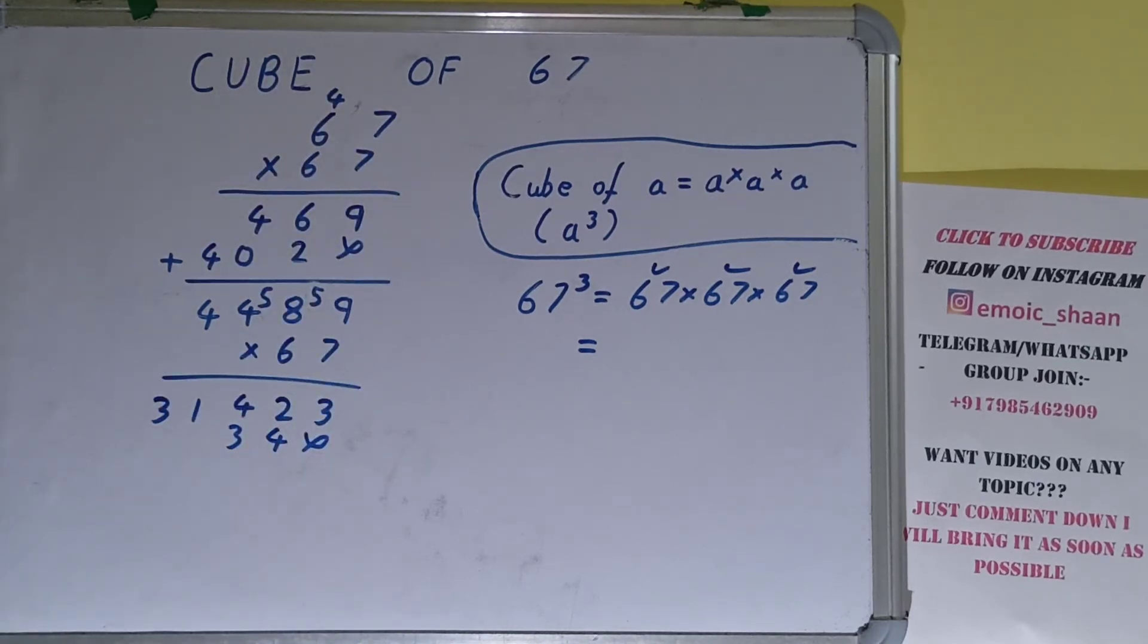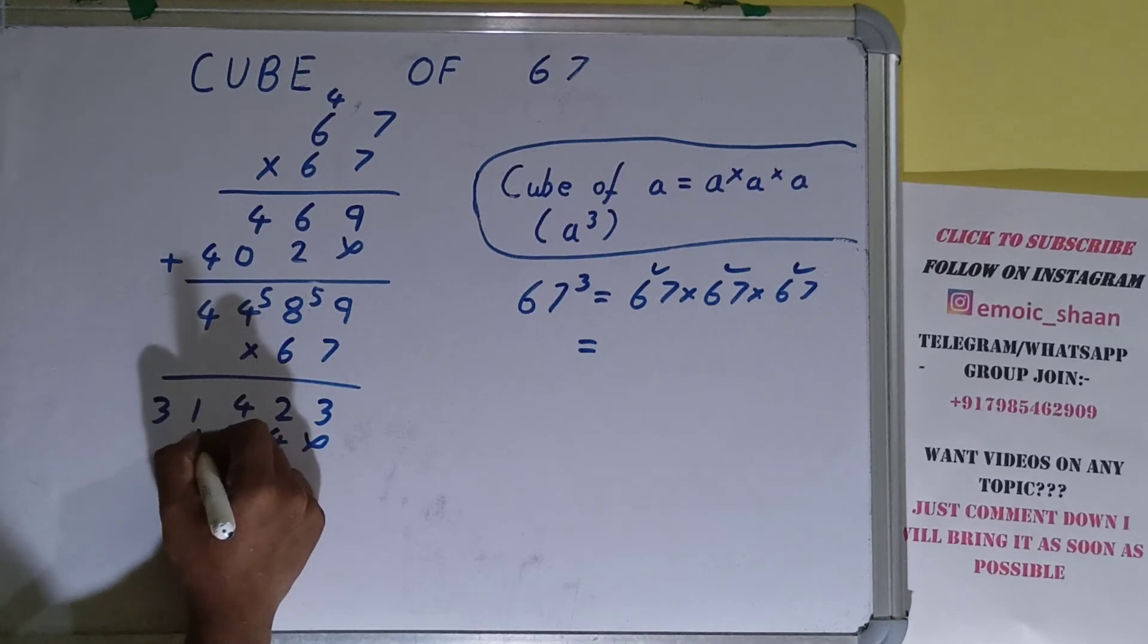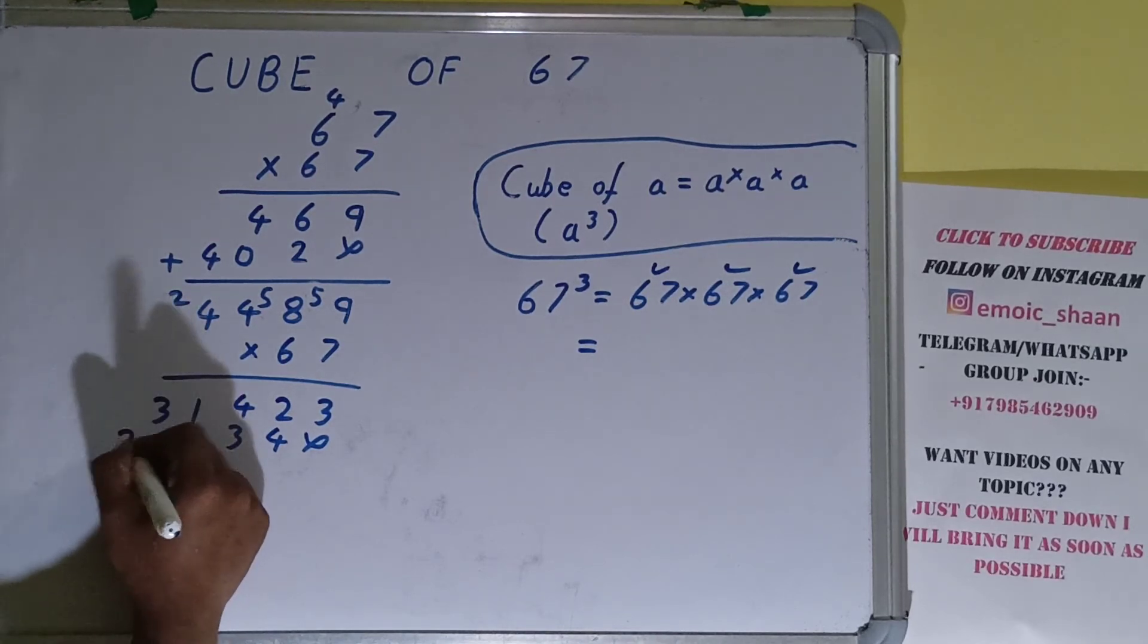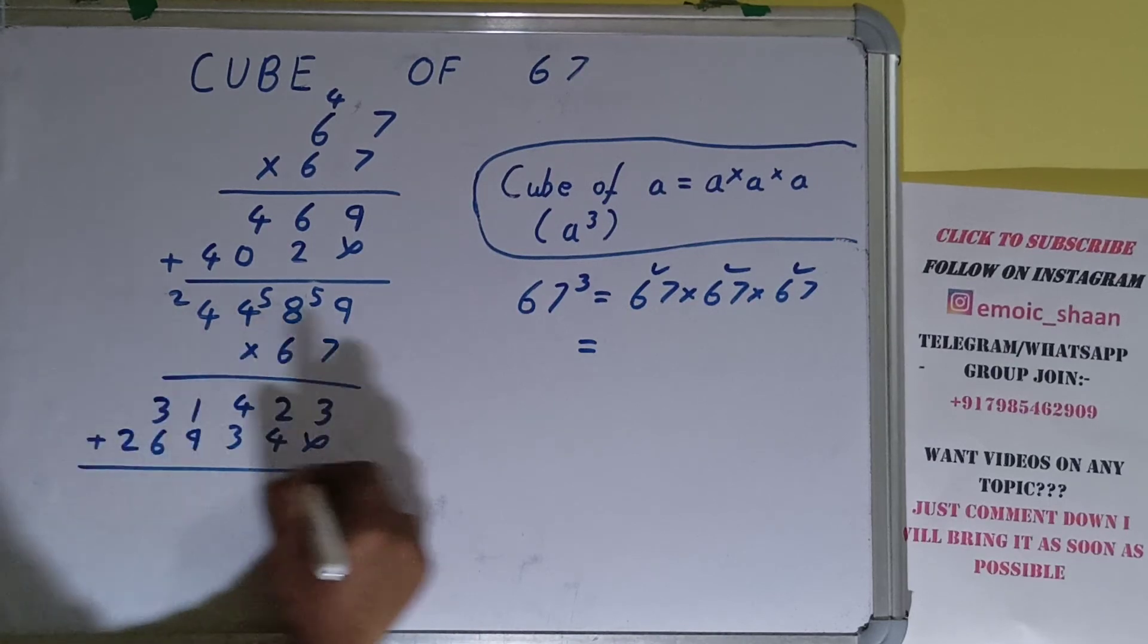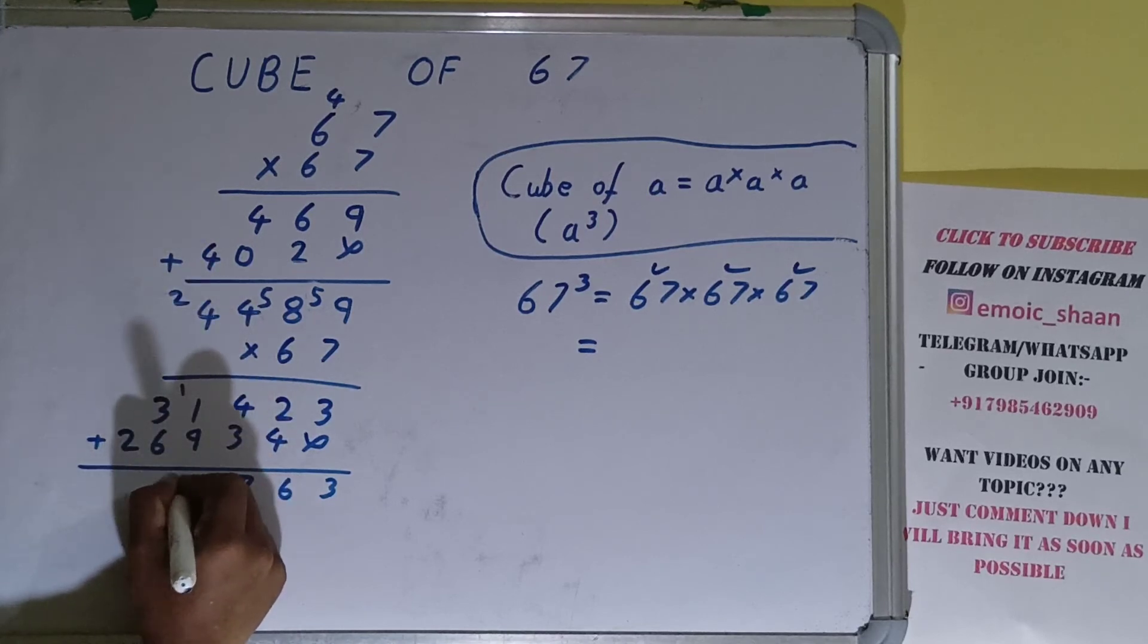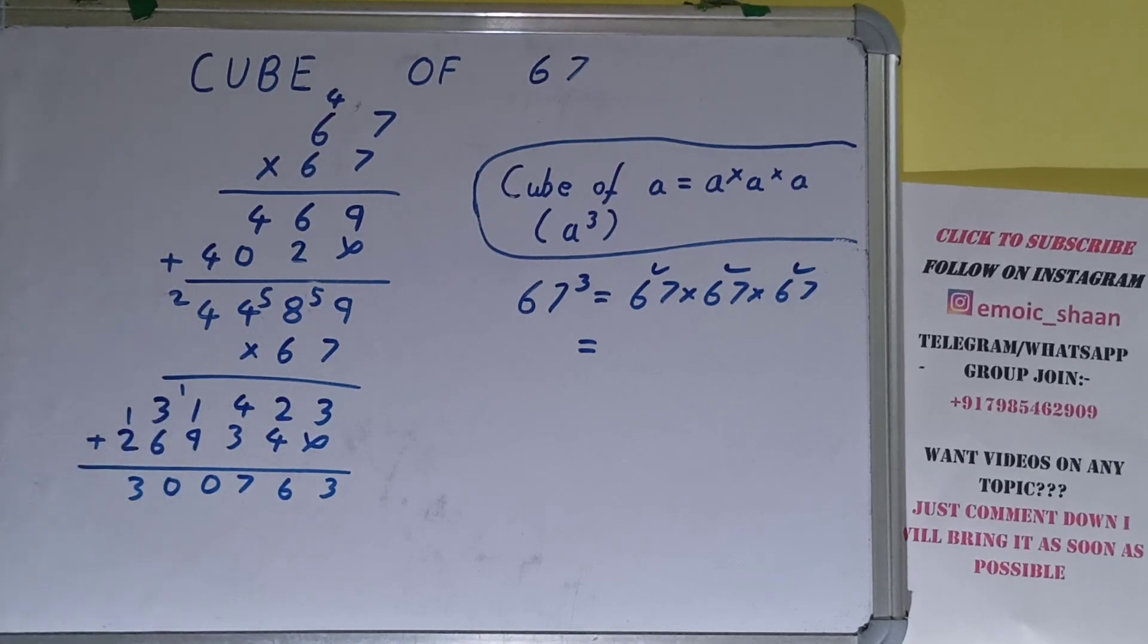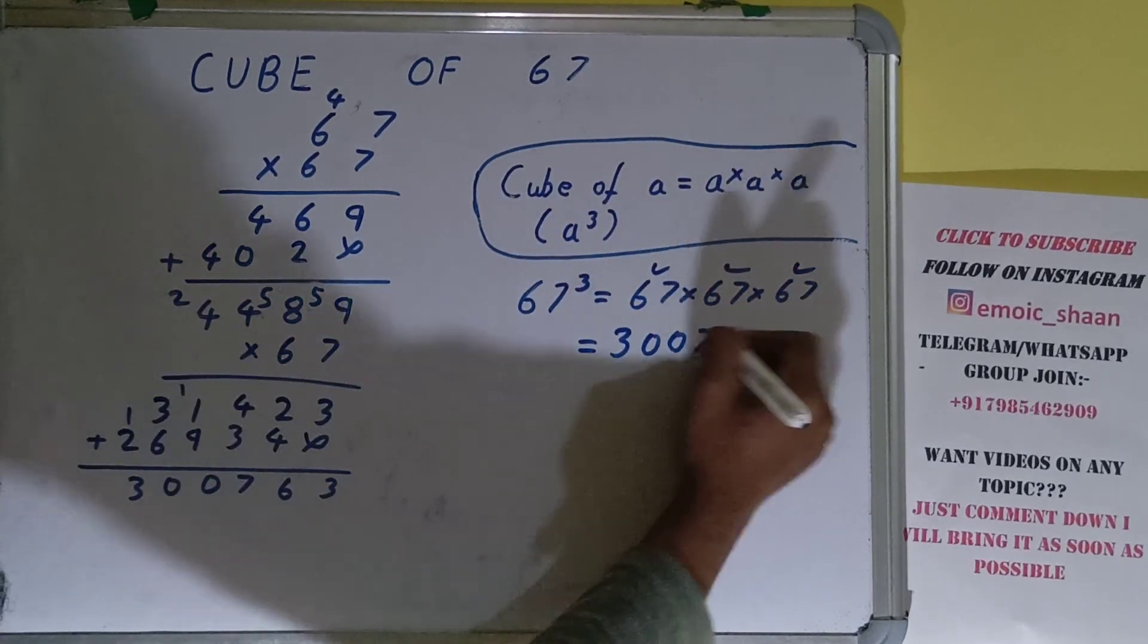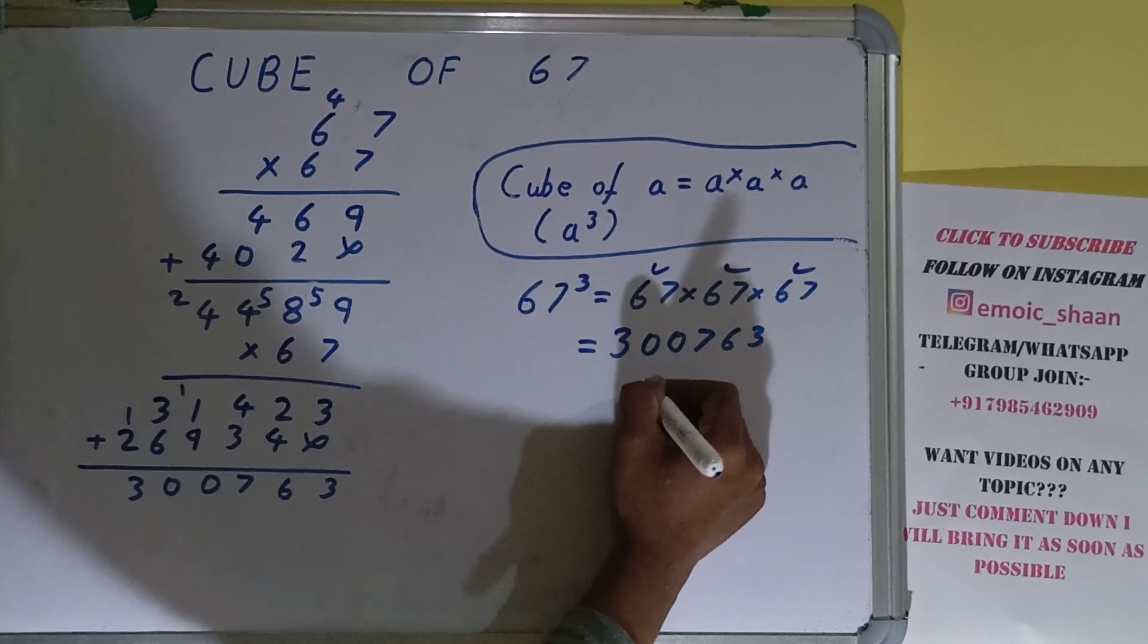plus 5 is 29, 2 carry. 6 × 4 is 24 plus 2 is 26. Adding them up: 300763. So your answer will be 300,763. That will